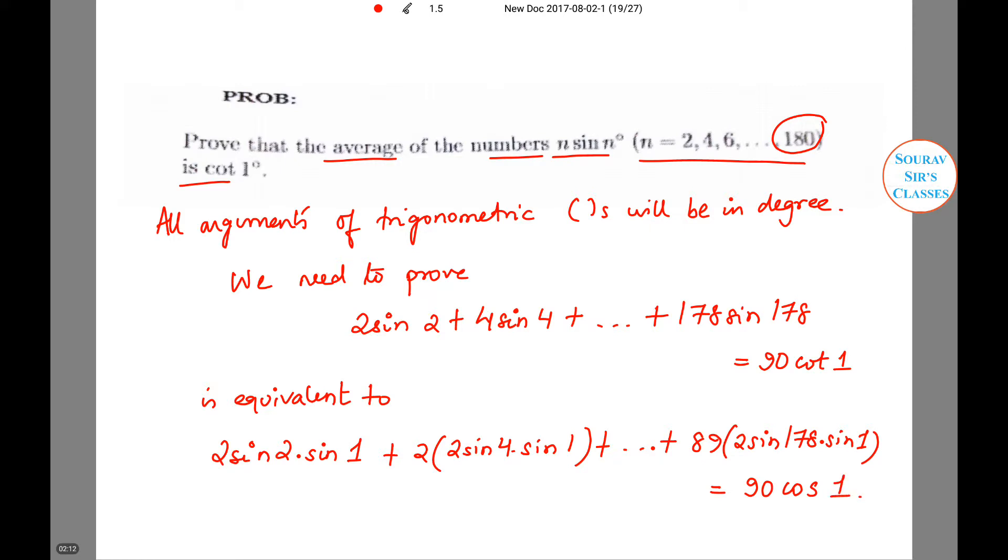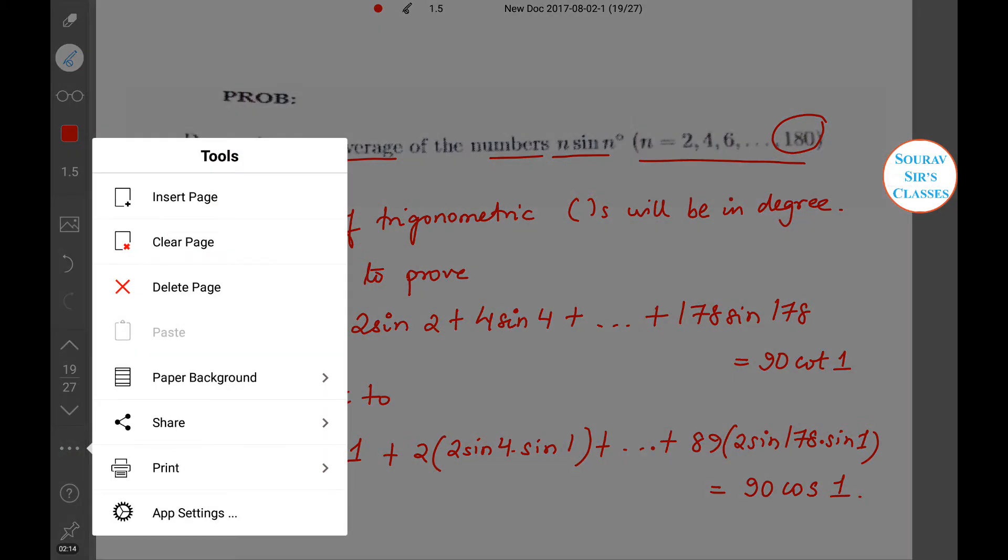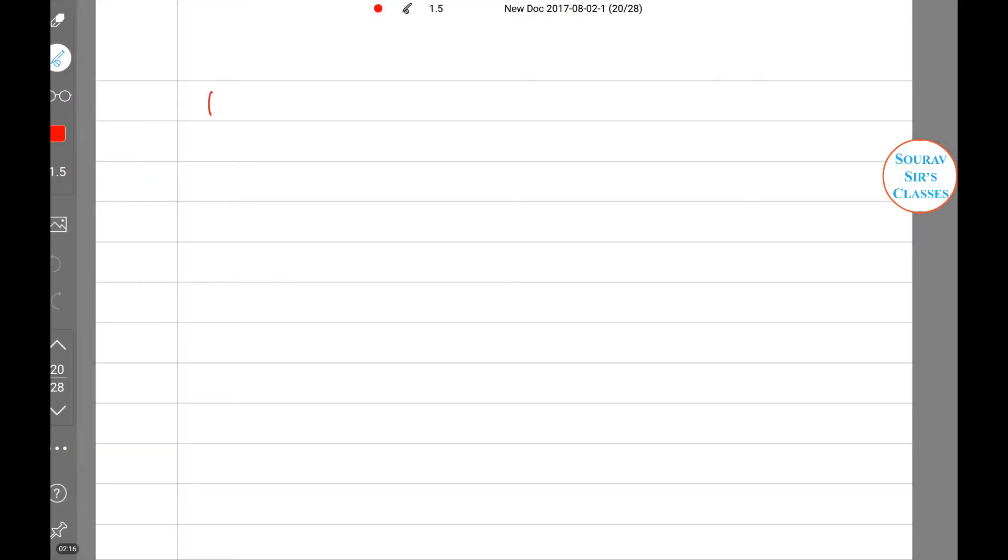Using the identity 2 sin A sin B equals cos(A - B) minus cos(A + B), we find: